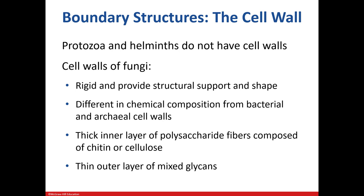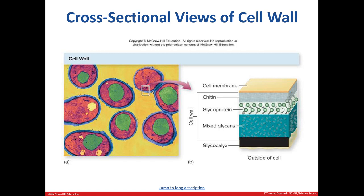Not all eukaryotes have a cell wall. Protozoa, along with worms, don't have this structure. In fungal cells, the cell wall is a lot more rigid and is not composed of peptidoglycan, but rather chitin or cellulose. In this figure, we can see the major components of a eukaryotic cell wall, which includes chitin, glycoproteins, and the mixed glycans.